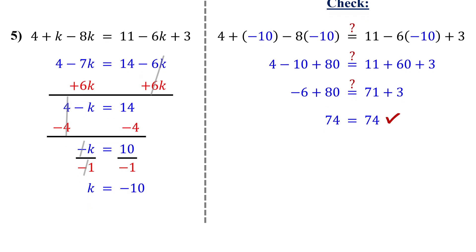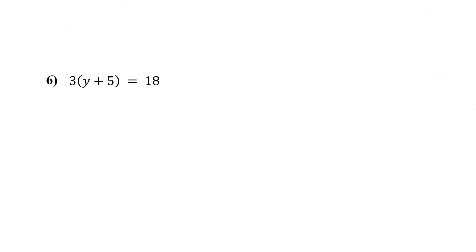Now let's move on to an equation that includes parentheses. In this case, the first step is to remove the parentheses using the distributive property — that means multiplying the number outside the parentheses by each term inside. Here, we distribute the 3 to both y and 5. 3 times y is 3y, and 3 times 5 gives us 15. Bring down the equal sign and 18. This is now just a two-step equation.